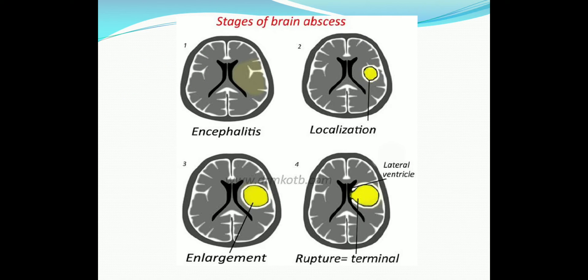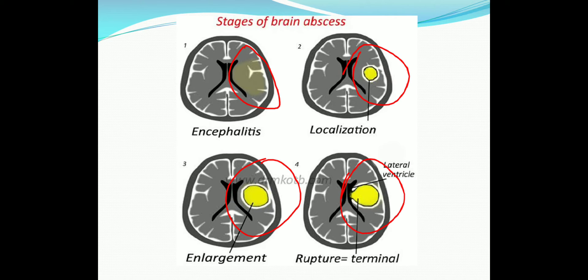There are four stages of development of brain abscess. First is the stage of invasion or initial encephalitis — this stage may be asymptomatic. Next is the stage of localization, when the body tries to localize the pus by forming a capsule — usually also asymptomatic. Third is the stage of enlargement, where the abscess enlarges causing increased intracranial tension and focal neurological deficits. The fourth and final stage is termination — the abscess ruptures into the ventricles or subarachnoid space, resulting in fatal meningitis.